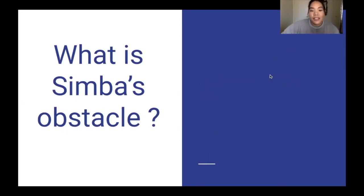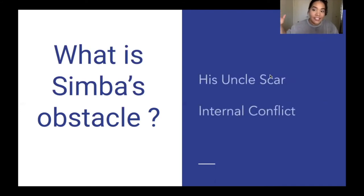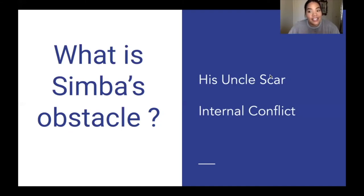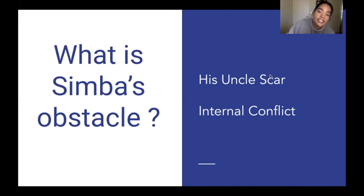What is Simba's obstacle — what is stopping him from achieving his objective of being the rightful king? The most obvious answers are his uncle Scar, who is stopping him from being king, and one might also argue it is the internal conflict Simba has with himself. We see this most textually in the scene with Nala, where he talks about how he can never go back and doesn't want to be king anymore.